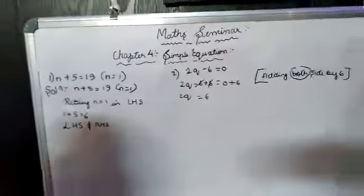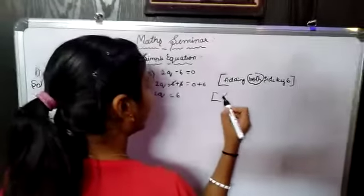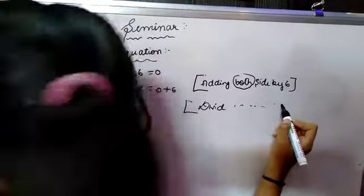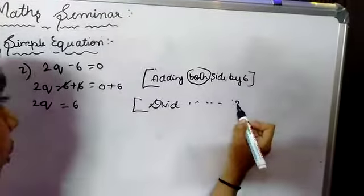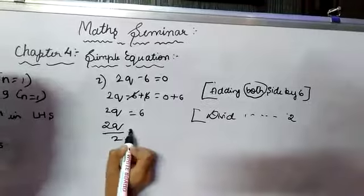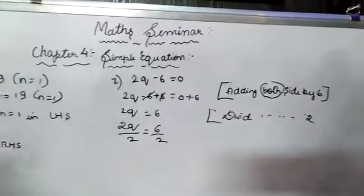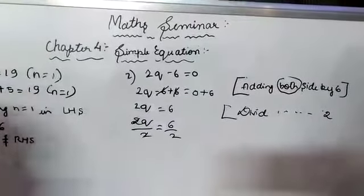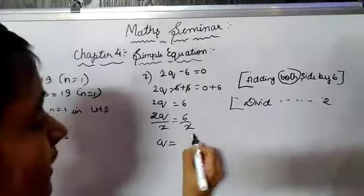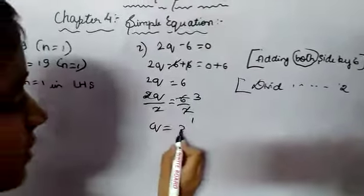We have to get the Q value, so we divide both sides by 2. So 2Q upon 2 equal to 6 upon 2. The 2s get cancelled on the left, leaving Q. On the right, 6 upon 2: 2 threes are 6, so Q equal to 3.